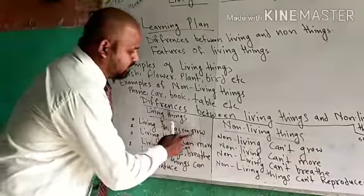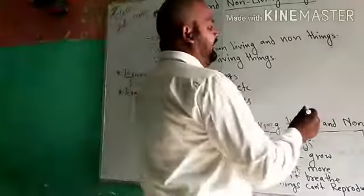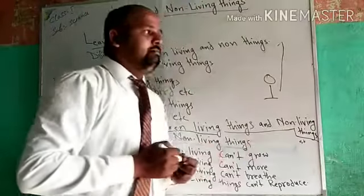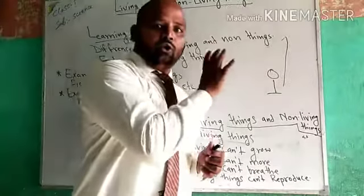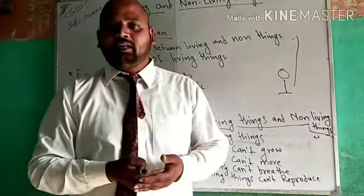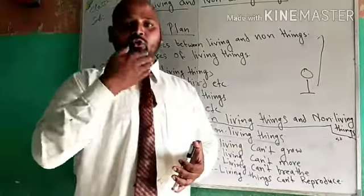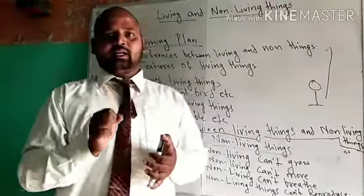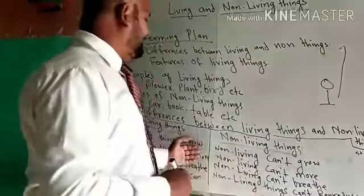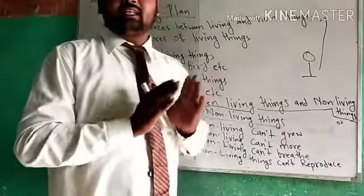Living things can grow. Living things हमेशा grow करते हैं — grow means बढ़ना। जैसे ही आप एक पेड़ को nursery से लाकर plant करते हैं, तो वह धीरे-धीरे बढ़ता है — it shows the process of growing. आप देखते होंगे एक-दो weeks के बाद आपके nails बढ़ जाते हैं — it means हमारे शरीर में growing हो रहा है। Non-living things cannot grow — वो जैसे के तैसे रहते हैं।